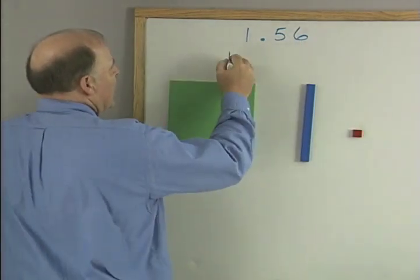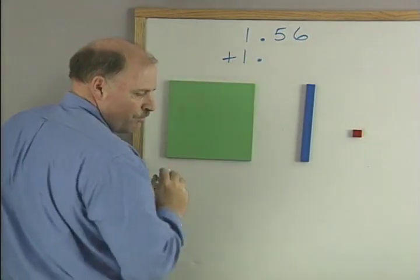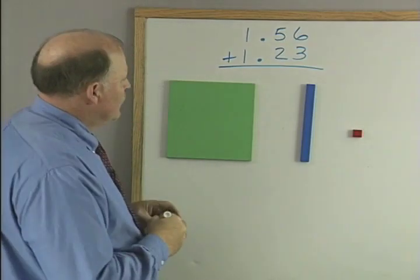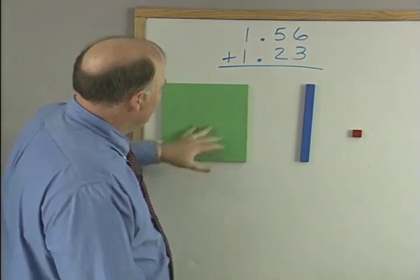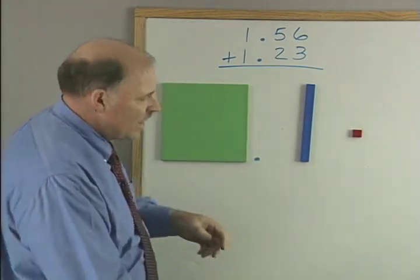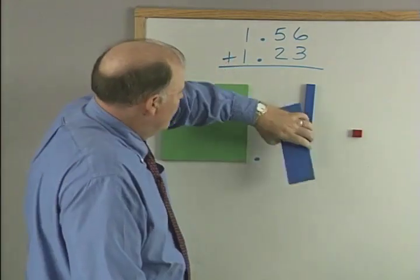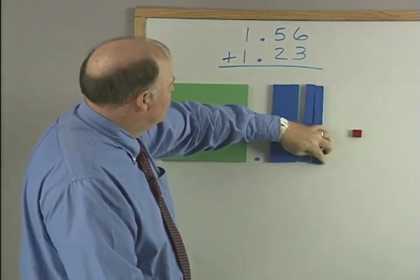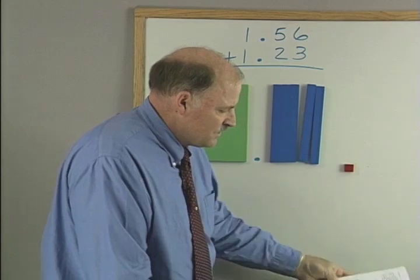We're going to add to that 1.23. So now I've got the 1 up here, and I've got my decimal point here. So now I need 5 more of the blue tenths.